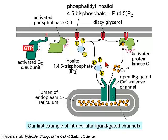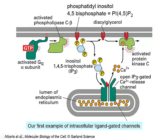The IP3 diffuses to the endoplasmic reticulum, where it opens an IP3-gated calcium release channel, releasing calcium from the lumen of the endoplasmic reticulum. This is our first example of intracellular ligand-gated channels. The activated protein kinase C is activated concurrently by diacylglycerol and by the calcium released from the endoplasmic reticulum.